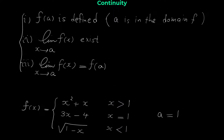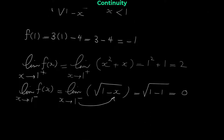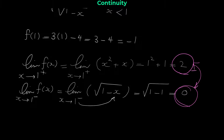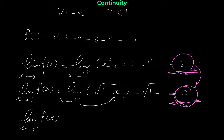The second condition requires the limit to exist. But the right limit is 2 and the left limit is 0 — they are different. Therefore, the limit of this function when x approaches 1 does not exist.